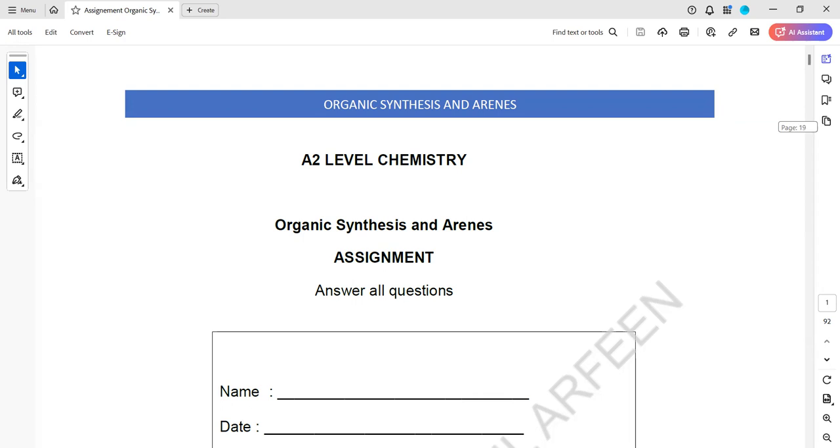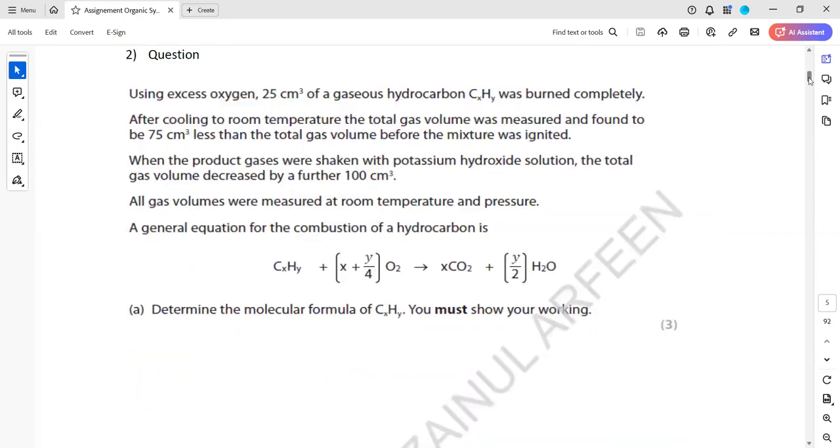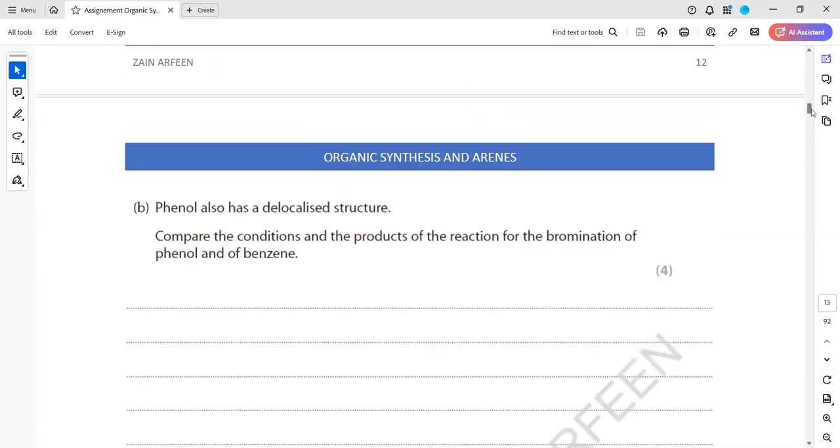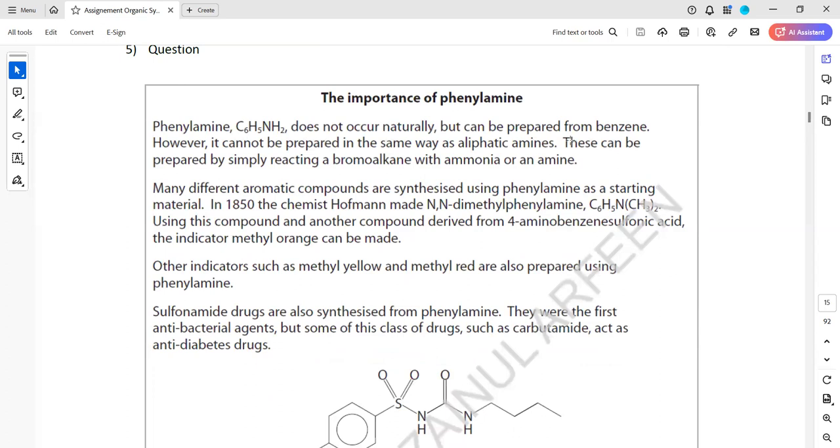So starting with question five. The importance of phenylamide. Phenylamide C6H5NH2 does not occur naturally, but can be prepared from benzene. However, it cannot be prepared in the same way as aliphatic amines. These can be prepared by a simple reaction of a bromoalkane with ammonia or an amine.